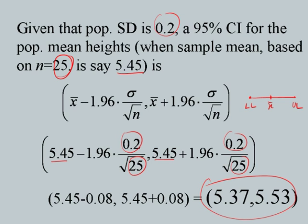Given that the population SD is 0.2, a 95% confidence interval for the population mean height — when the sample mean based on a sample of size 25 is 5.45 — is obtained by plugging in the sample mean, the SD, and sample size n = 25 into the formula, which gives us the required 95% confidence interval: 5.37 and 5.53.